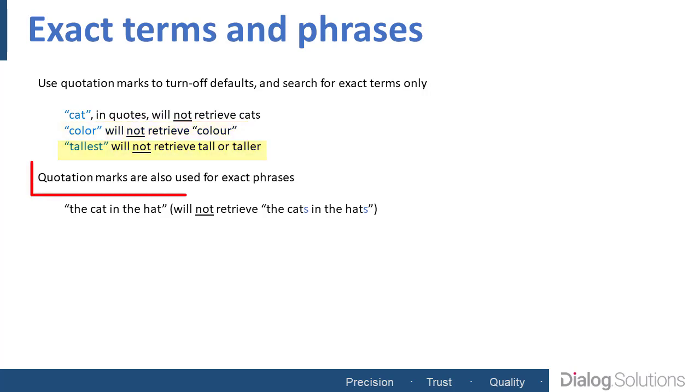Quotation marks are also the way you would search for exact phrases, such as 'the cat in the hat.' Note that 'the cat in the hat' in quotes would not get 'the cats in the hats' because the quotation marks make it an exact search. So if you want to get 'the cats in the hats' included in your results, you'd want to use some form of truncation at the end of the words cat and hat. Let's talk next about truncation.